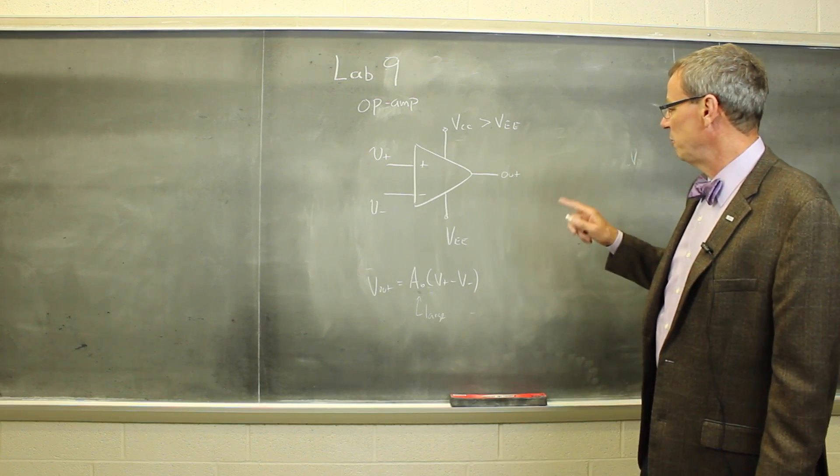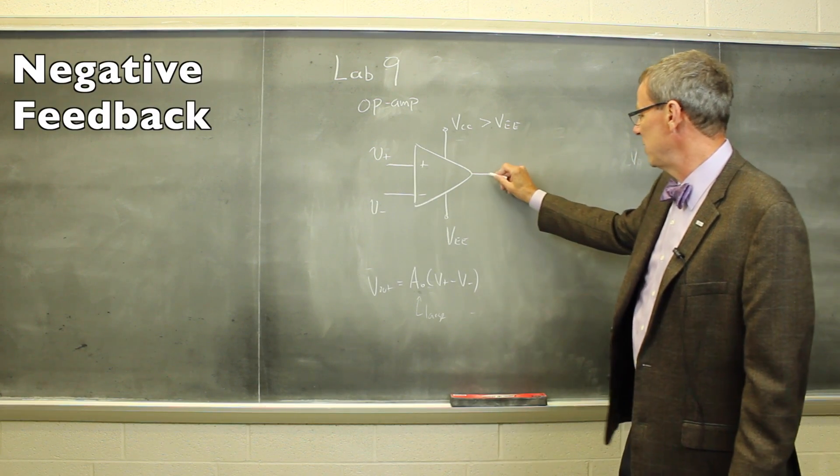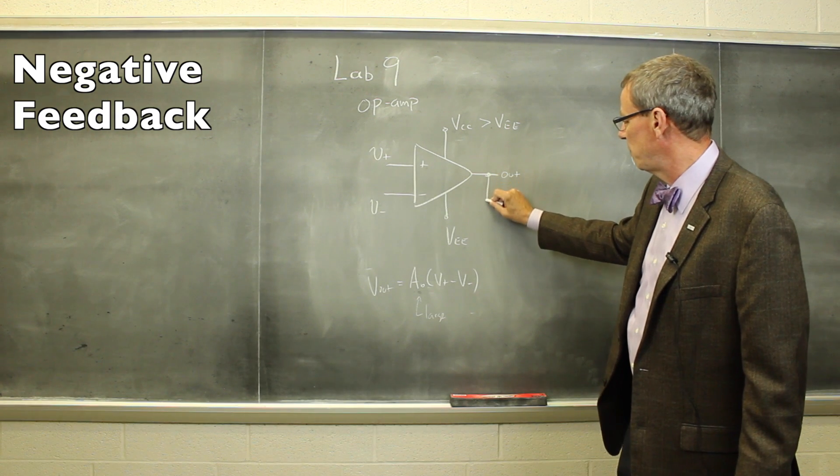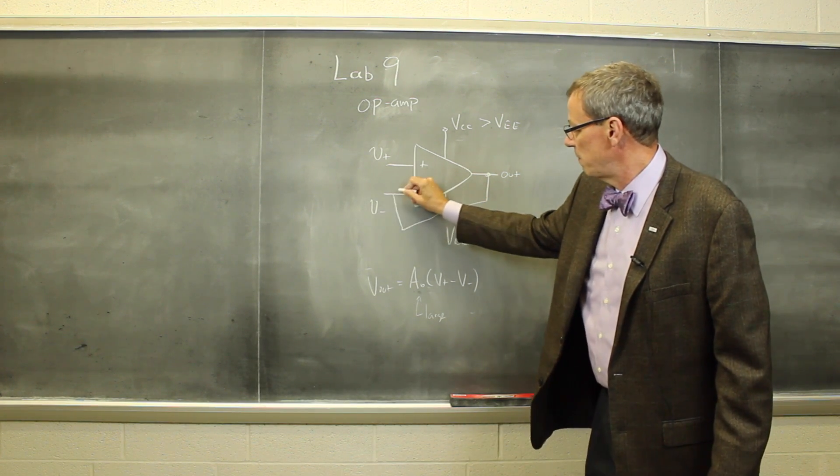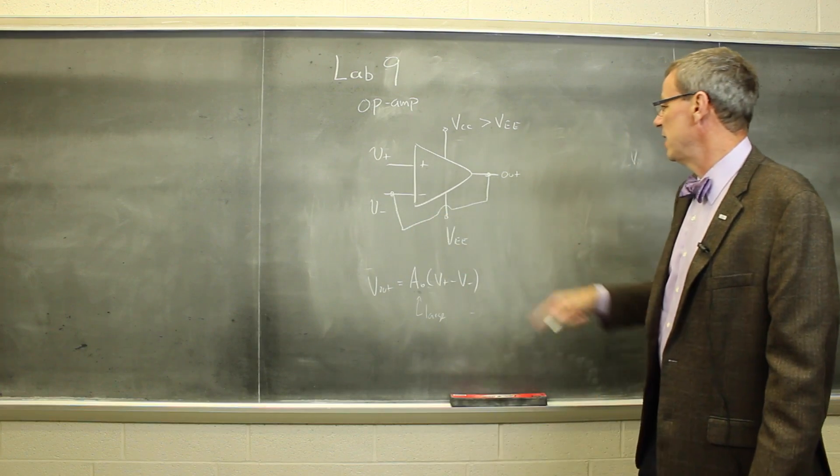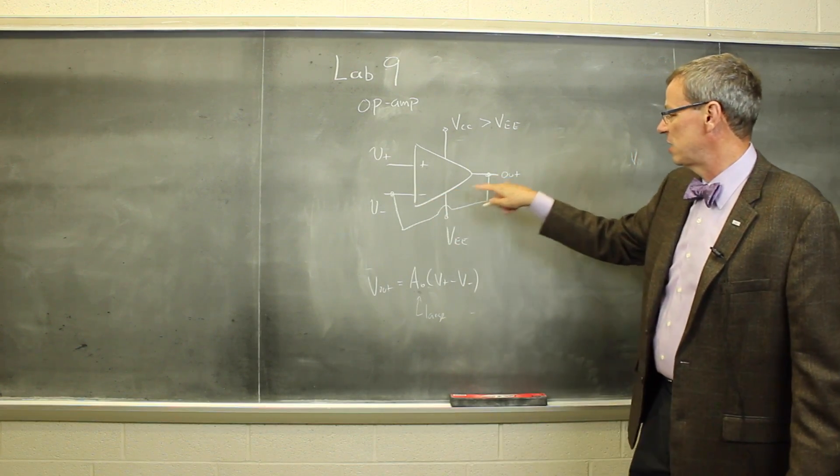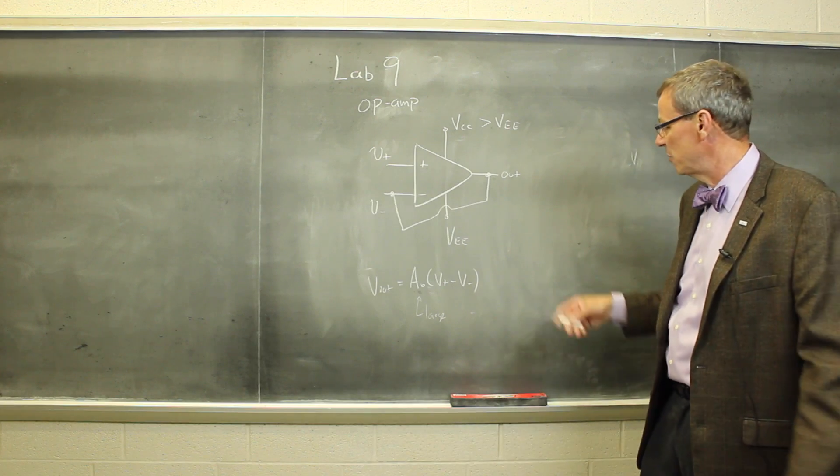When we use op-amps, we will use them with negative feedback, which means that we somehow connect part of the output back into the inverting input. So we have a connection between here and here, maybe through a resistor or some other component.